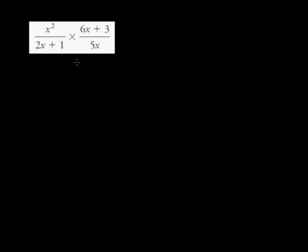Any time we multiply fractions, we want to multiply numerator times numerator and denominator times denominator, but if we are multiplying two rational expressions, we want to look at factoring everything first. We're going to make sure each piece in the numerator is factored and each piece in the denominator is factored.